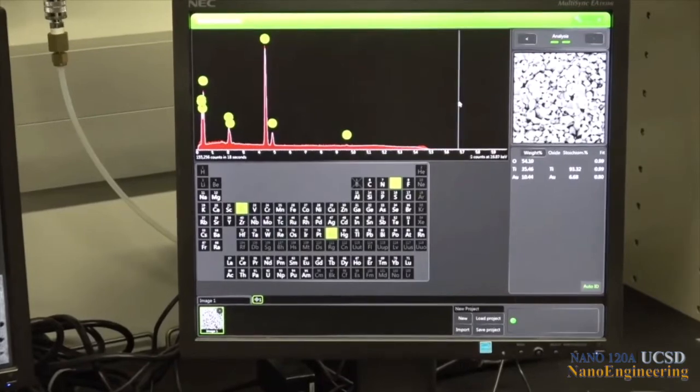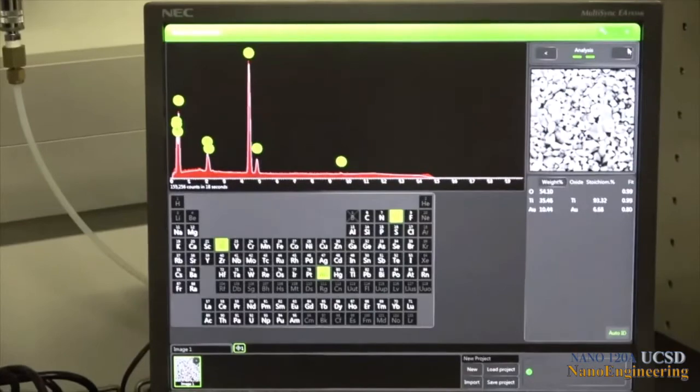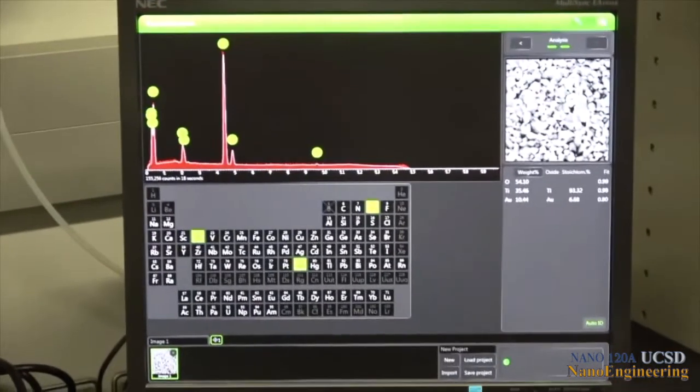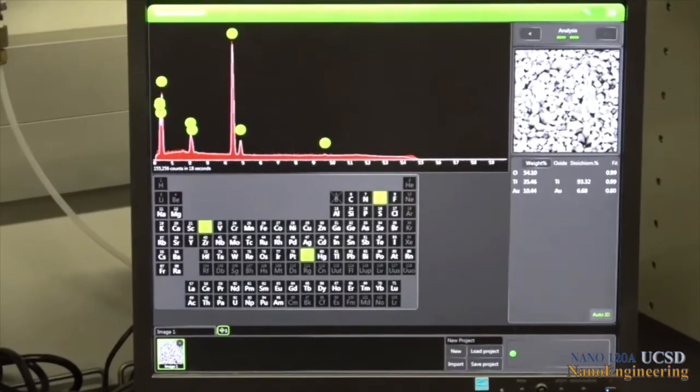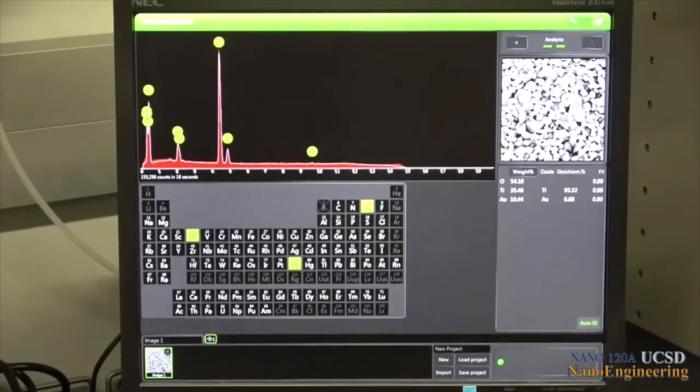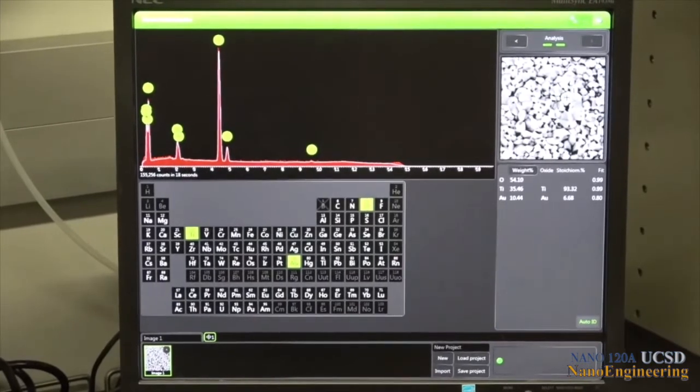The variations in sample heights and orientations of surfaces with respect to the X-ray detector in a fracture surface can affect X-ray counting. Flatter samples fare better for accurate quantitative analysis in comparison.